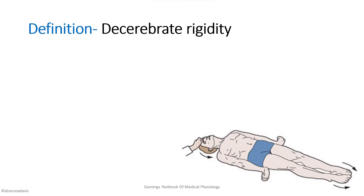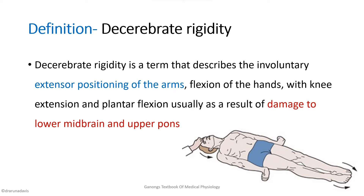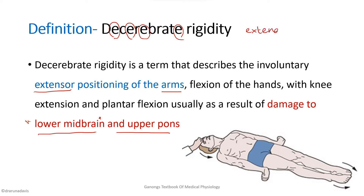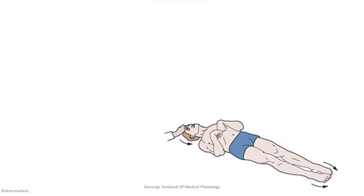Now the definition of decerebrate rigidity: it is a term that describes involuntary extensor positioning of the arms, flexion of hands, knee extension, and plantar flexion, usually as a result of damage to the lower midbrain and upper pons. If the lesion is in the lower midbrain, the person will be in an almost fully extended form. A memory tip: in the term 'decerebrate' there are many E's, so remember the person is in an extended position.